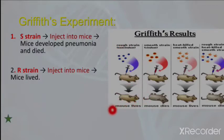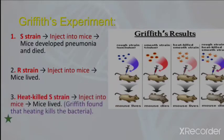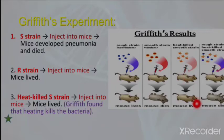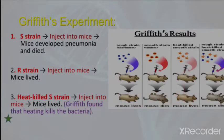The third step was that Griffith heat-killed the S strain — he killed the S strain bacteria using heat. When that heat-killed S strain bacteria was injected into the mice, the mice survived. This was a surprising result, because the S strain is normally harmful, but after being heat-killed and injected, the mice survived. Griffith concluded that heating kills the bacteria.